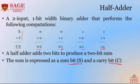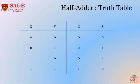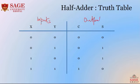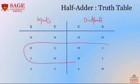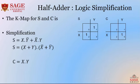This is how the half adder works. The half adder takes two input bits and produces two output bits. We can represent this in the form of a truth table where x and y are the inputs and c and s are the outputs. When both inputs are 0, carry and sum are both 0. When one input is 0 and another is 1, we get sum 1 and carry 0. When both inputs are 1, we get sum 0 and carry 1.